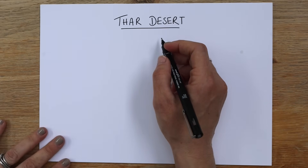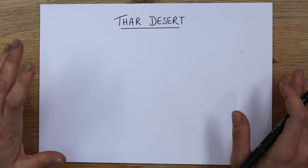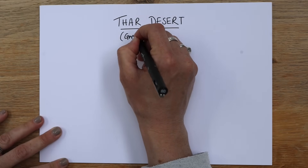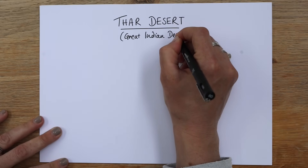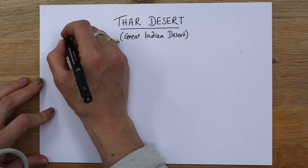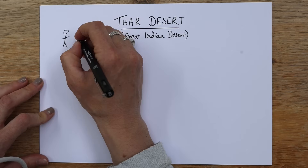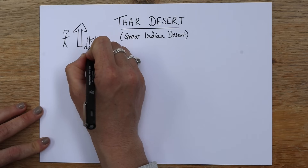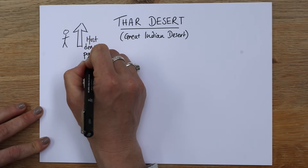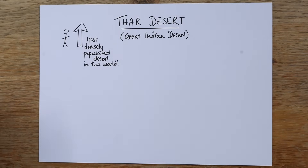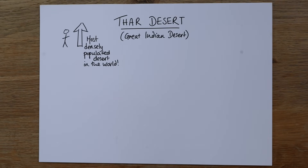So the Thar Desert. This is a desert to the east of the Indus River in northwestern India and southeastern Pakistan. It is known as the Great Indian Desert. It is a huge desert, and it's also the most densely populated desert in the world. So there's something happening here that's working really well, because humans have managed to settle — and not just settle, but there's been some great opportunities as well.